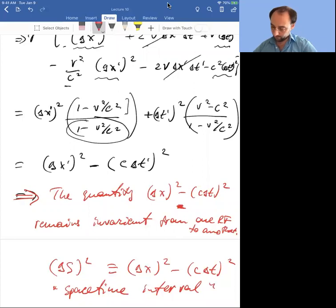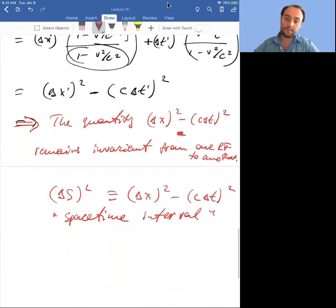So perhaps in some books they call delta s the space-time interval, in some books they call delta s squared the space-time interval. It's not that important. The point is that it's invariant. I will call this whole combination the space-time interval, even though it's delta s squared. Don't get hung up on that terminology.